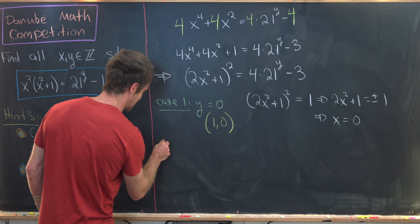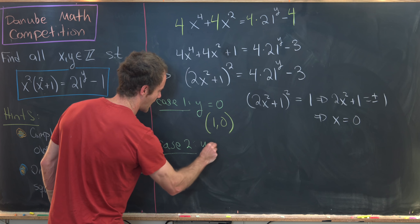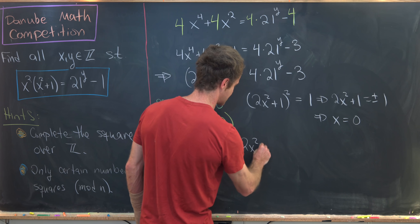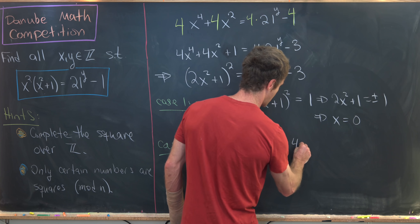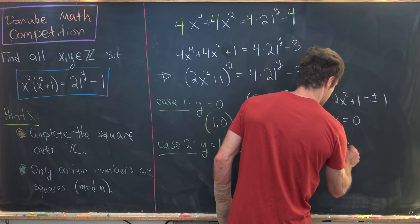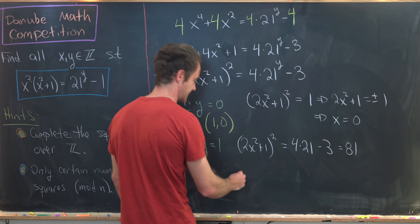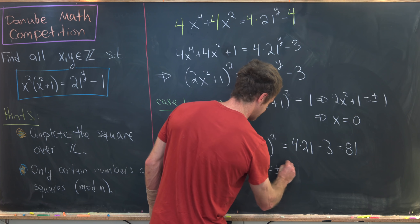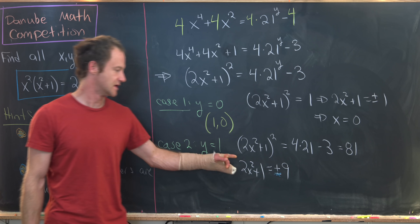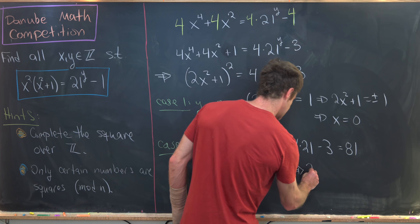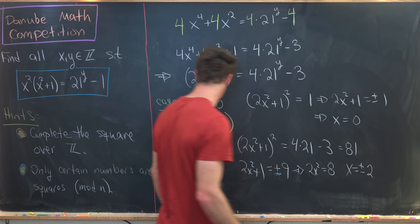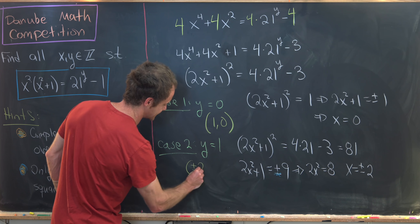Case 2: y equals 1. Then 2x squared plus 1, quantity squared, equals 4 times 21 minus 3. That's 84 minus 3, which is 81 — a perfect square, equal to 9 squared. Taking the square root: 2x squared plus 1 equals plus or minus 9. Since 2x squared plus 1 is always positive, we take the positive root. Moving the 1 over gives 2x squared equals 8, so x squared equals 4, meaning x equals plus or minus 2. That gives us two solutions: (±2, 1).